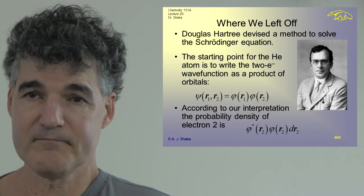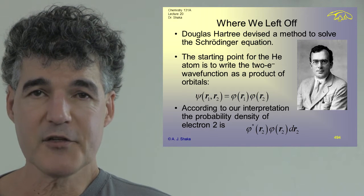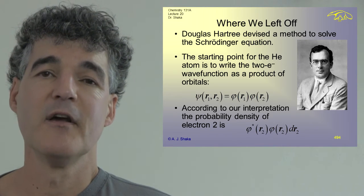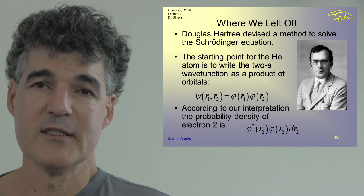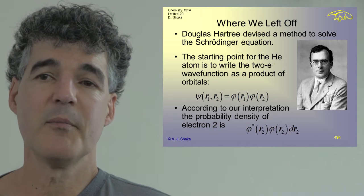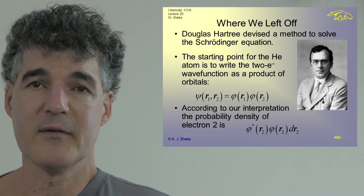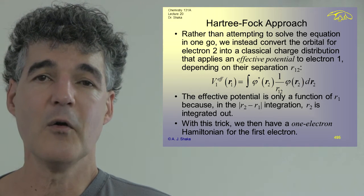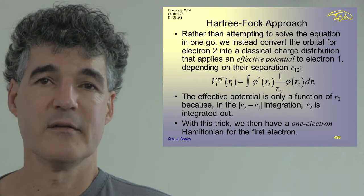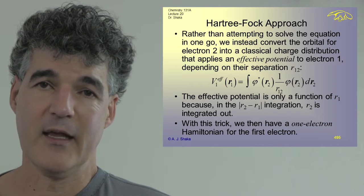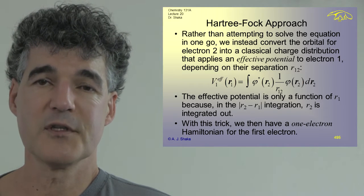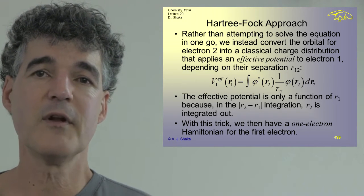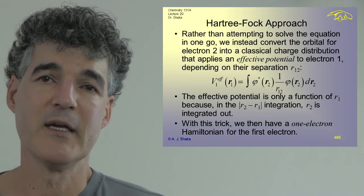It's much better than nothing. According to our interpretation of probability density, the probability density of electron two is just φ*(R₂) φ(R₂) dR₂ — the probability density that you're going to be in that region of space. Rather than attempting to solve the equation in one go, we instead convert this second electron into just a classical charge distribution. That's the essence of the simplification.